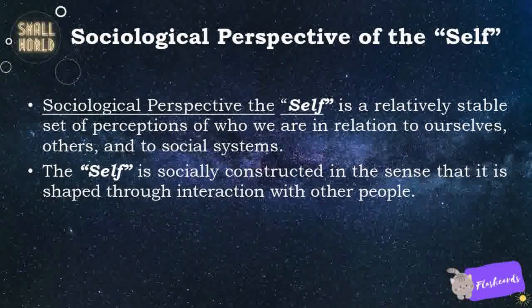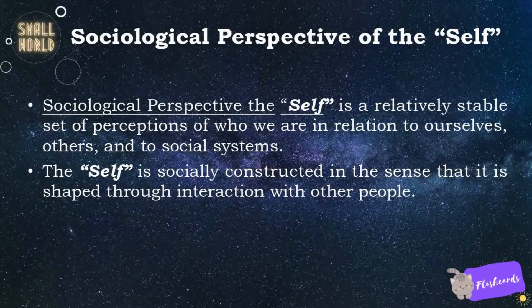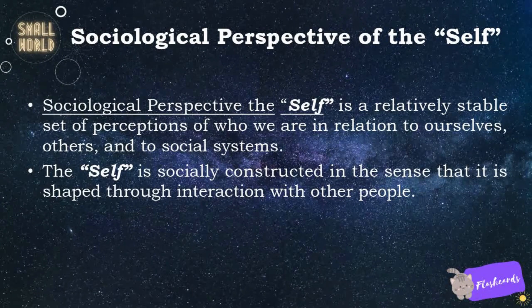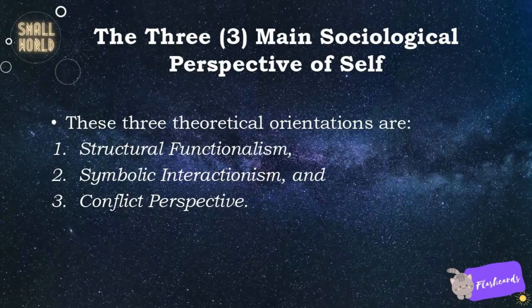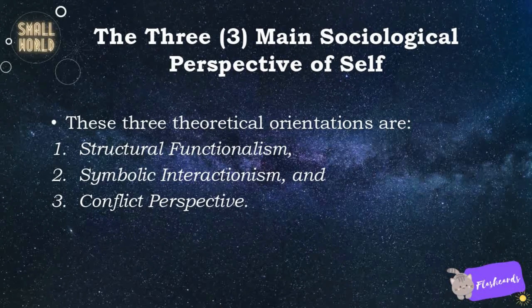The sociological perspective of the self is a relatively stable set of perceptions of who we are in relation to ourselves, others, and to social systems. The self is socially constructed in the sense that it is shaped through interaction with other people. The three main sociological perspectives of self are: 1. Structural functionalism, 2. Symbolic interactionism, and 3. Conflict perspective.